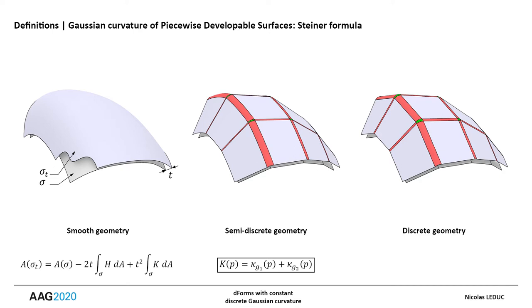The result of particular interest here is that the Gaussian curvature at a given point on the seam can be defined as the sum of the geodesic curvatures of the adjacent faces at the same point.